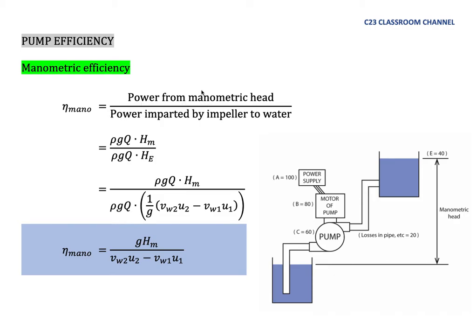The equation for manometric efficiency is the power from manometric head over the power imparted by the impeller to water. The power from manometric head is calculated using the equation: power = ρgQH. We need to be selective about which H we use — for power from manometric head we use manometric head H_m, and for power from the impeller we use Euler head H_e, because Euler head is the head generated by the impeller. After substituting and cancelling ρgQ, we get H_m over H_e.